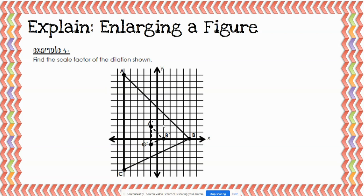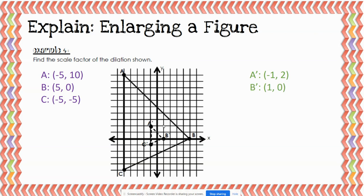Example four says: find the scale factor of this dilation. We want to find where each point is located first. A is five units left and ten units up: coordinates (-5, 10). B is five units right and does not move up or down: coordinates (5, 0). C is five units left and five units down: coordinates (-5, -5). For the image: A prime is one left and two up: (-1, 2). B prime is one right and doesn't move vertically: (1, 0). C prime is one left and one down: (-1, -1).